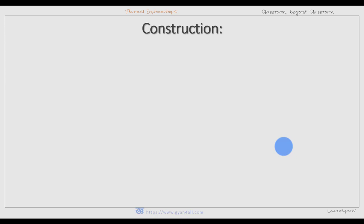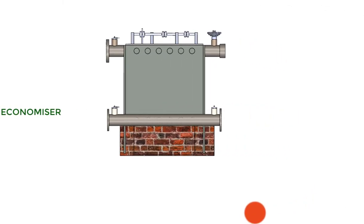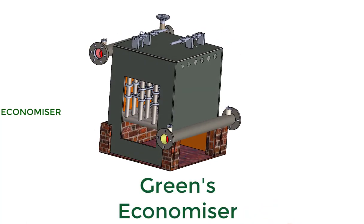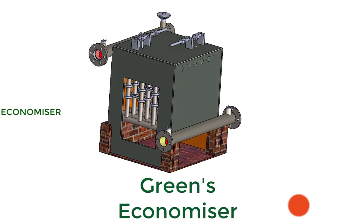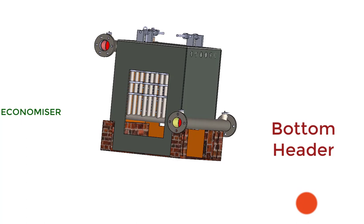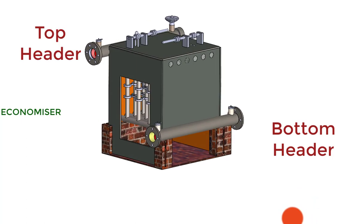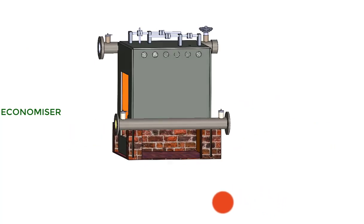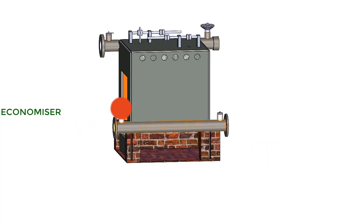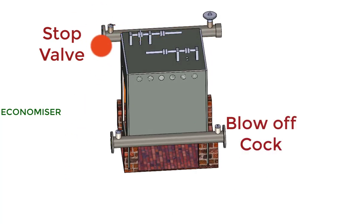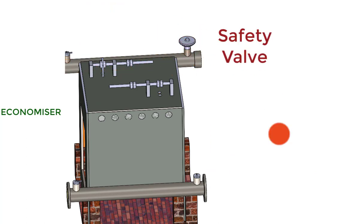Now let us understand the construction of an economizer. This is a 3D model of an economizer, also called the Green's economizer. Green's economizer consists of two headers: one bottom header and one top header. There is also a top valve, a blow-off cock, another stop valve, and a safety valve at the top header.